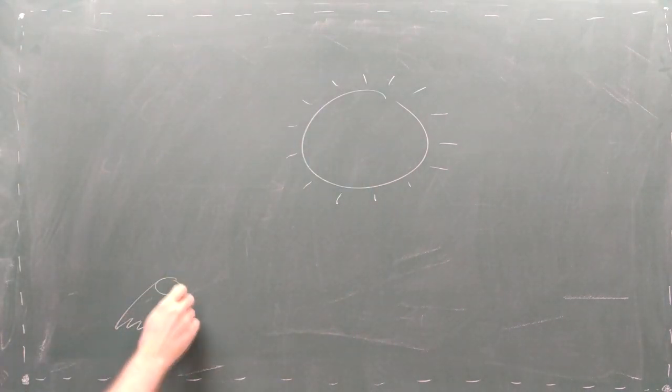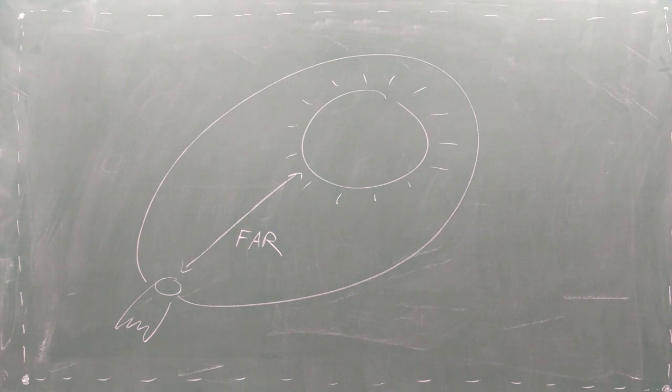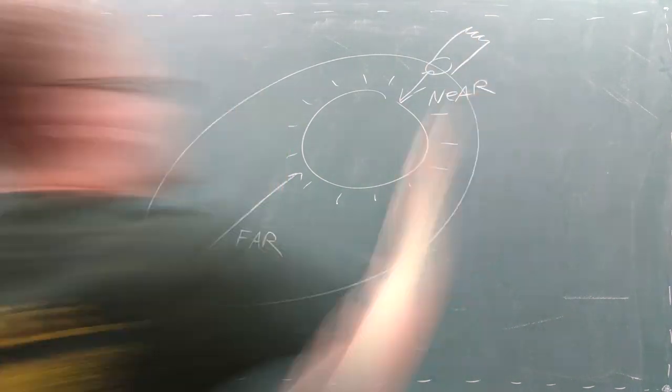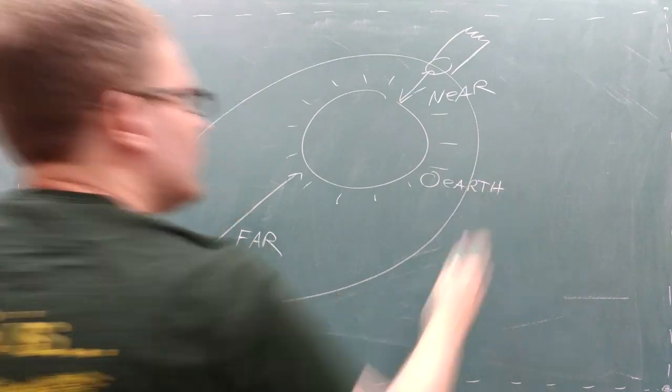Comets, for example, have very distorted orbits coming in from far away and approaching very closely to the star before they turn around and head right back. This is why seeing a comet on Earth is so rare, because they spend so much of their time far away from us.